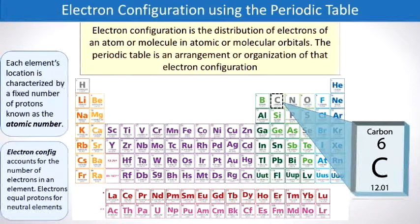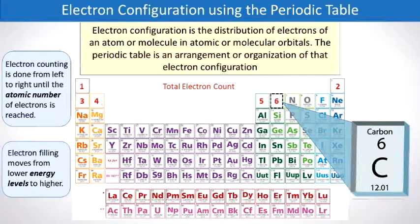Let's start to teach this concept by using carbon. Carbon has an atomic number of 6, which is the number of protons and also equals the number of electrons. So if we were to count electrons in carbon, we would start from left to right, and its total electron count would be 1, 2, 3, 4, 5, 6.